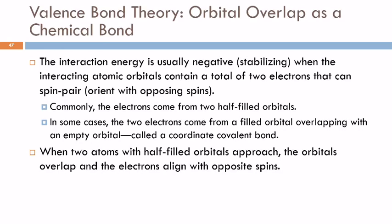But it doesn't have to be that way. There's something called a coordinate covalent bond, and this happens when you've got two electrons from a filled orbital overlapping with an empty orbital on another atom. Now this doesn't happen nearly as often, but it can happen.